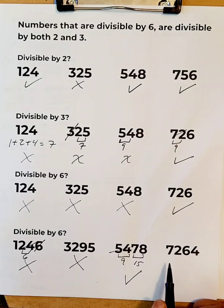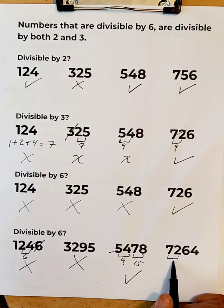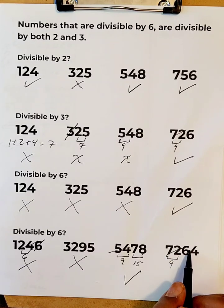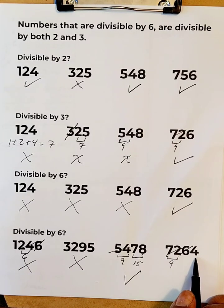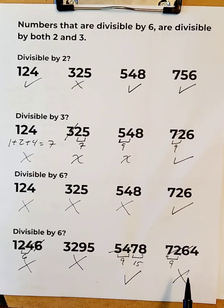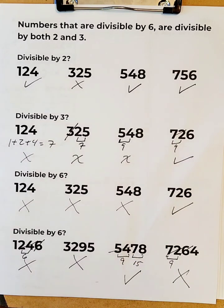For the last number, 7 and 2 make 9, which is good, but the 6 is already divisible by three and the 4 is not, so this number is not divisible by three and therefore cannot be divided by six. So this is the only number in the set that is divisible by six.